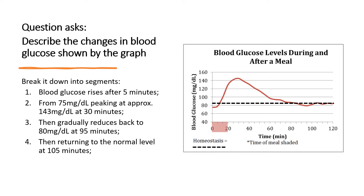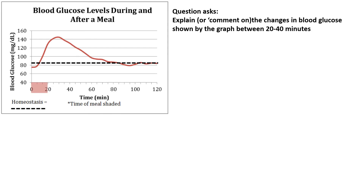On the other hand, if your luck's really out, you might be asked to explain or comment on the changes in blood glucose — but usually within a specific time period rather than the whole graph. So the question might say: explain or comment on the changes in blood glucose shown by the graph between 20 and 40 minutes. This is where you can see it's going up, peaks, and then goes back down. The best way to deal with it is to start at the left-hand side, deal with events in a logical order, and show your understanding.